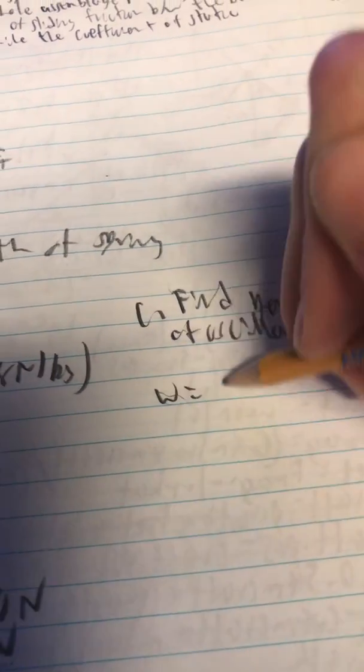And we can first find angular frequency, or we can go ahead and do the whole thing in one step where the period is equal to 2π over the angular frequency, which is square root of K over M.